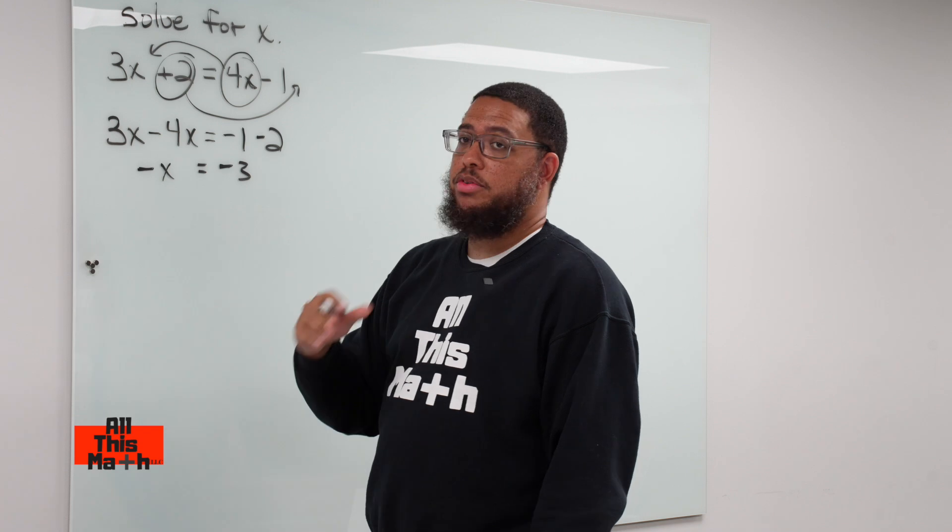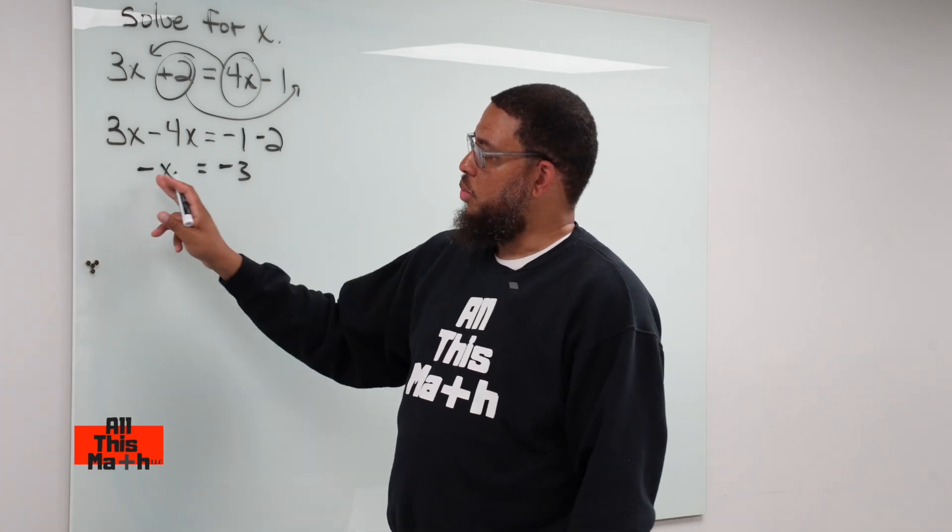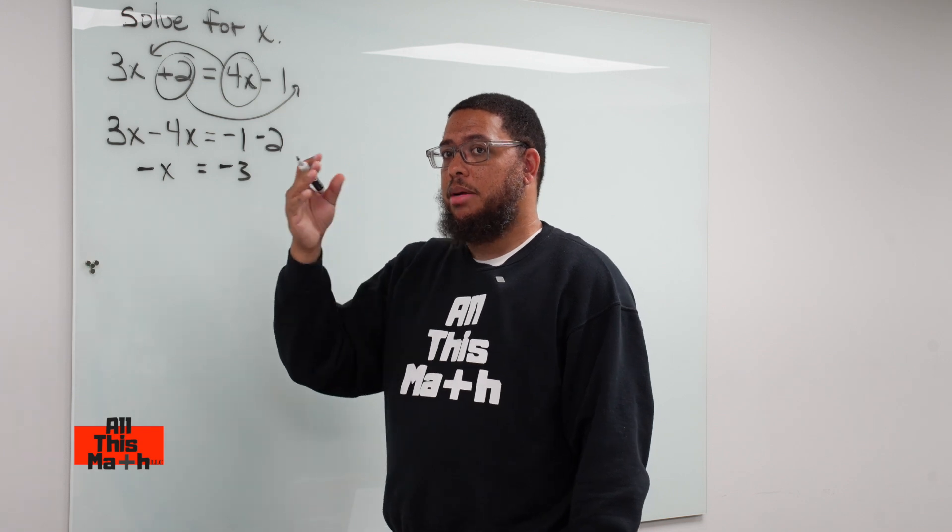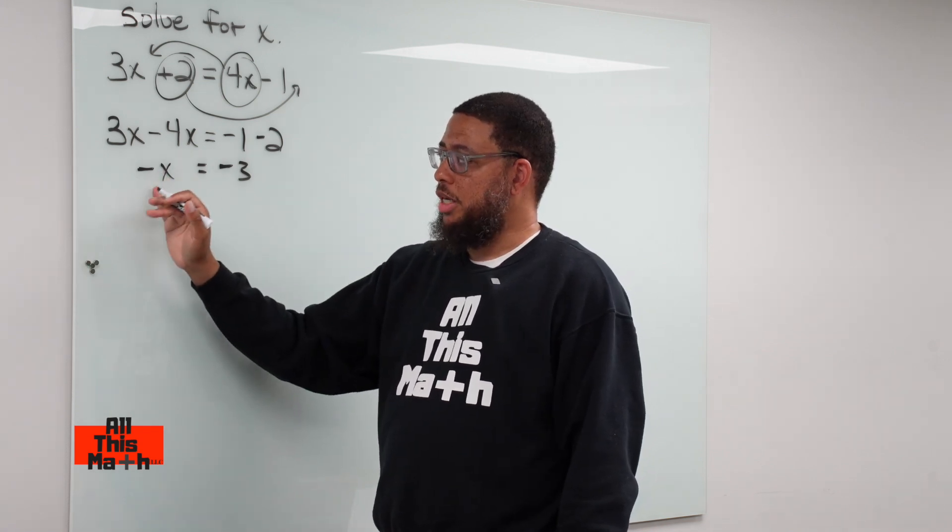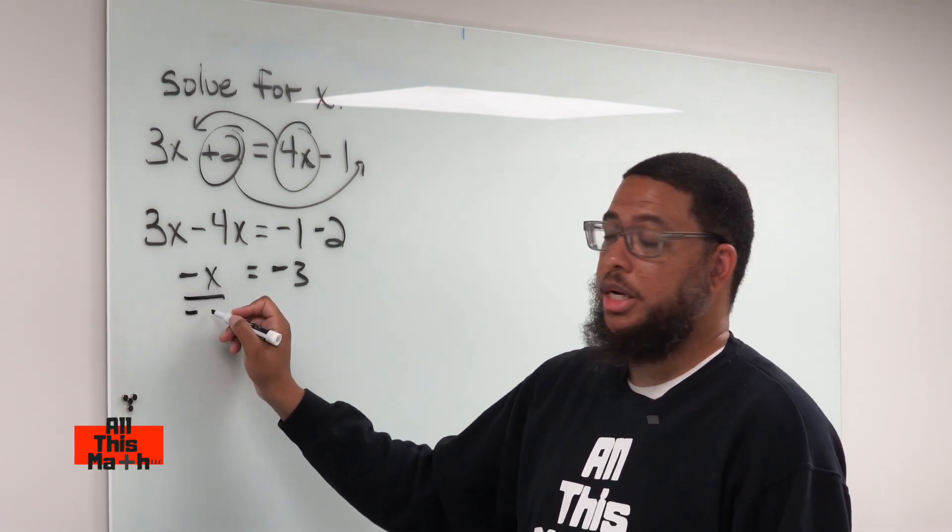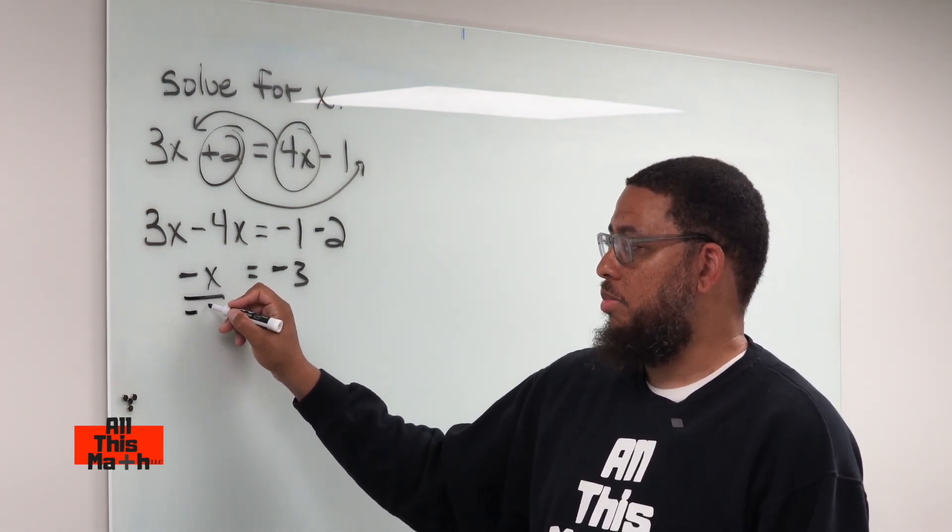So we need to get rid of this negative 1. So in order to get rid of negative 1, we have to do the opposite operation. What does negative 1x mean? Negative 1x means that we're doing negative 1 times x. So this represents multiplication. So the opposite of multiplying is dividing. So that's what we're going to do. Because when we want to get rid of something in algebra, we do the opposite operation.